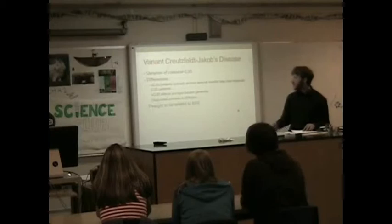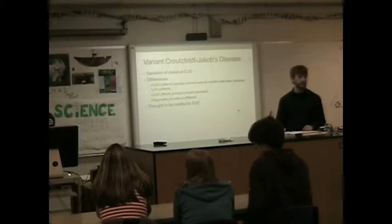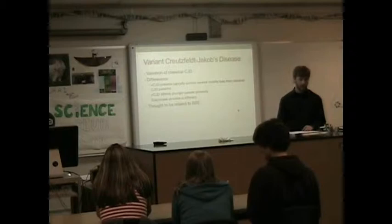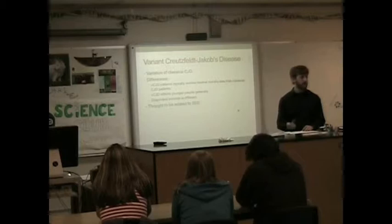With variant Creutzfeldt-Jakob's disease, the big difference is they typically last a shorter amount of time. Typically people that get infected, the mean age for people infected with classic CJD are 68 years old, whereas people infected with variant CJD are only 28 years old.